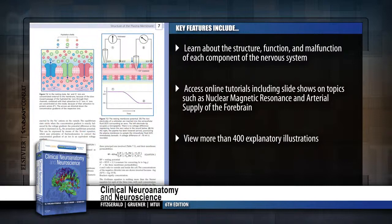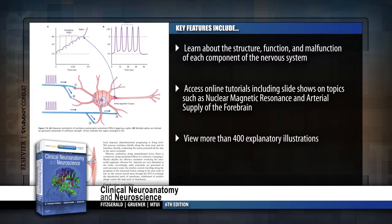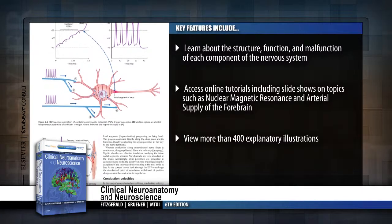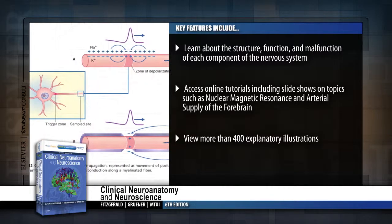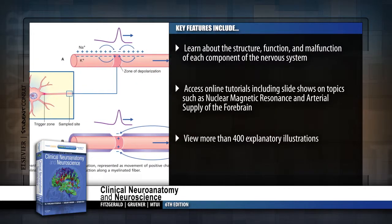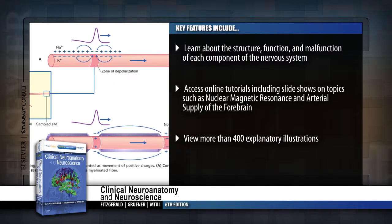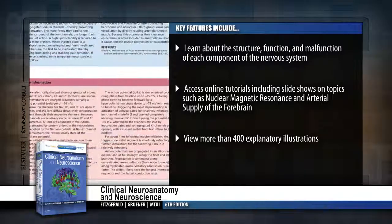Learn about the structure, function, and malfunction of each component of the nervous system. Access online tutorials including slideshows on topics such as nuclear magnetic resonance and arterial supply of the forebrain. View more than 400 explanatory illustrations.